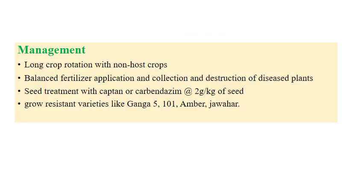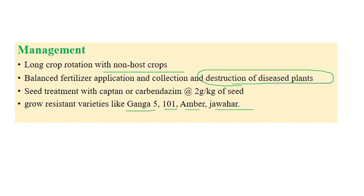Coming to management practices for charcoal rot: crop rotation with non-host crops is required, along with balanced fertilizer application and collection and destruction of diseased plant material, since the pathogen can survive in plant stubs and resting structures in the soil. Seed treatment with captan or carbendazim at the rate of 2 grams per kilogram of seeds is also recommended. Resistant varieties include Ganga 5, Ganga 101, Amber, and Jawra.